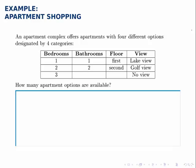An apartment complex offers apartments with four different options designated by four categories: the number of bedrooms, the number of bathrooms, which floor the apartment is on, and which view you get. We want to know how many apartment options are available.